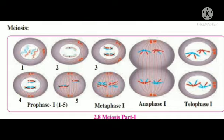In the process of cell division called meiosis, one diploid — that is, twice the number — cell divides, and from that one cell, four haploid — that is, single set — cells are produced.